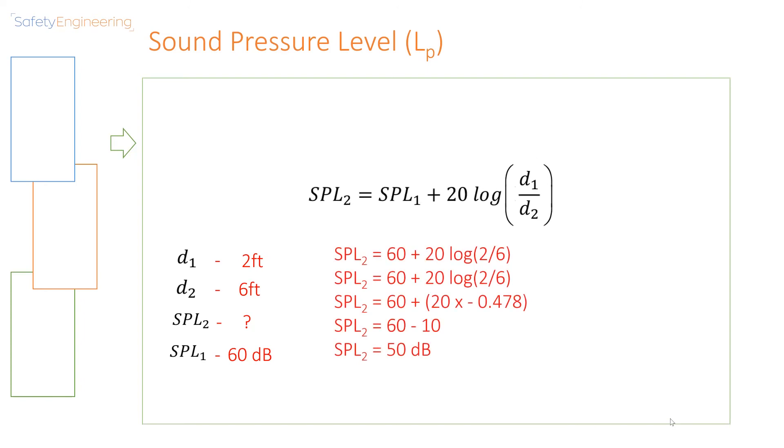By putting these values into our equation, we are going to get a value of 50 decibels for SPL2. The important thing to know about applying this equation is to ensure that your SPL2 corresponds with whatever your D2 is, and your SPL1 corresponds with your D1.